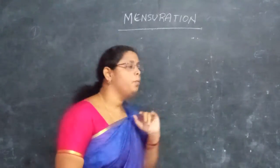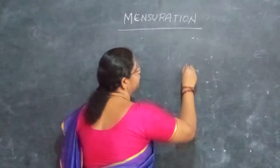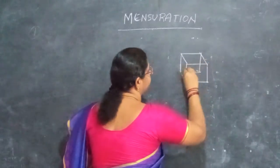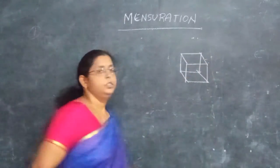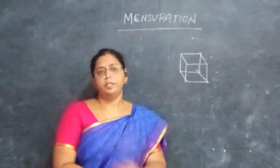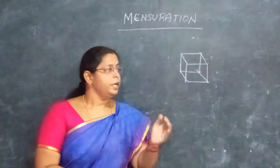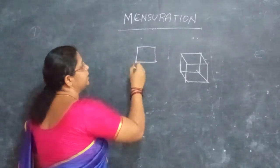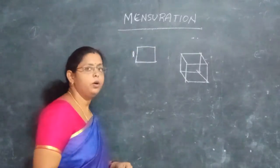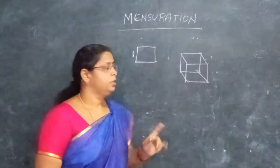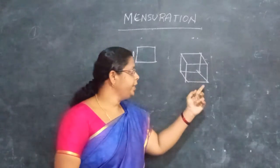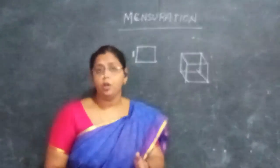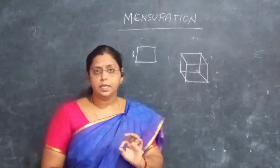So, the first shape is the cube. The cube shape — one side is a square, all sides are equal. This is a 2D shape and this is a 3D shape. So in 2D shape, all sides are equal.